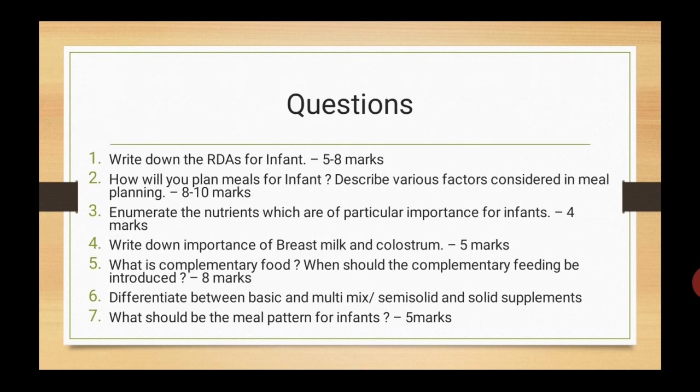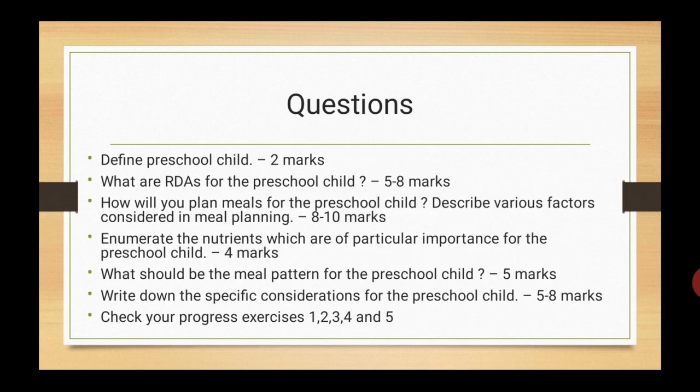With this, we have completed Unit 9. I hope you would have understood the topic well. There are questions from the first part of the unit on the infant, and from the second part on the preschool child. Go through these and also see the questions given in the check your progress exercises in between the chapters, as these are important from an exam point of view. Their answers are also available at the end of the unit. In the next video, we will start with Unit 10: Meal Planning for the School Child and Adolescent.